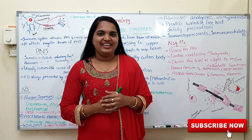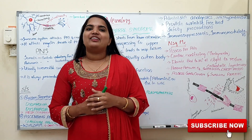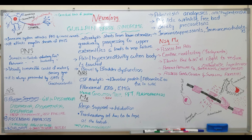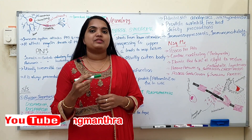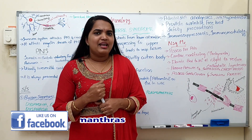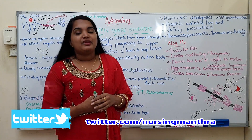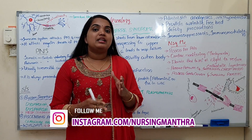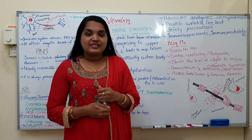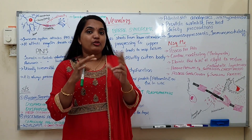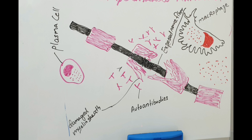Please subscribe the channel and press the bell button to get updated videos. Now, today's class we are going to discuss Guillain-Barré syndrome. We have discussed myelination sheath problems — demyelinating problems — that is multiple sclerosis. Same here, Guillain-Barré syndrome affects the nerve fibers mainly in the peripheral nervous system, whereas multiple sclerosis affects the central nervous system.